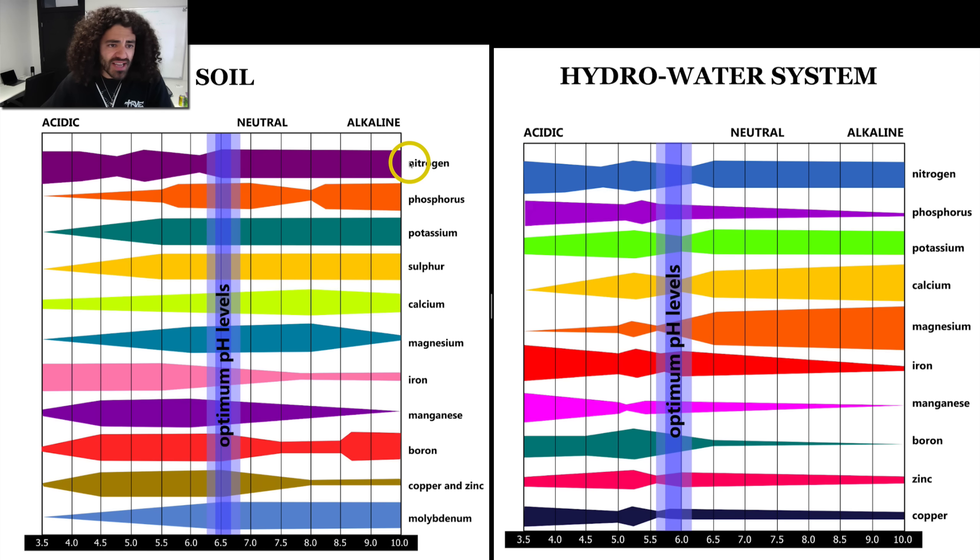So we've got the macronutrients, the micronutrients, and you can see the different availability for each of them at the different pHs. For instance, nitrogen is pretty readily available throughout the entire pH spectrum in soil, like 3.5 to 10. And the same thing with nitrogen in hydro. But when we get to phosphorus, it changes.